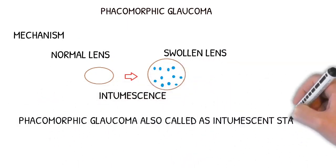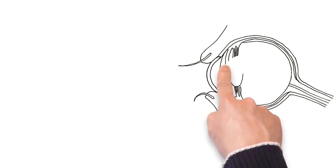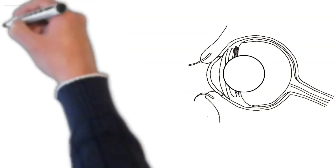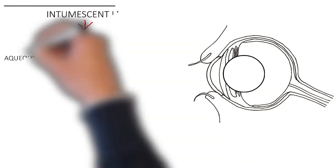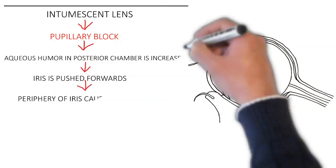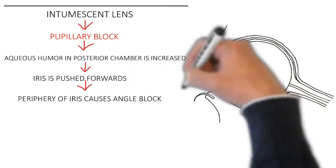Phacomorphic glaucoma is also called intumescent stage. Here the lens is swollen, as you can see. This is called intumescent lens, which causes pupillary block. Thus aqueous humor in the posterior chamber is increased. Iris is pushed forwards, leading to angle block.